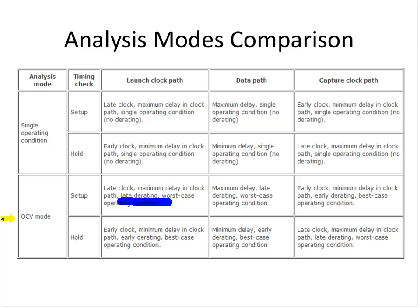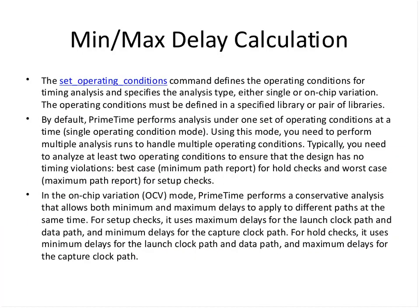If you set the late derate factor to 1.1, it will delay each path by 10% more — adding 10% to the absolute delay. On the other hand, for the capture clock path, it will apply the early derate factor to make the capture edge come earlier. If you choose the early derate to be 0.9, it makes the clock arrive a bit earlier. For hold, it works the other way: the data path comes earlier and the capture clock comes later.